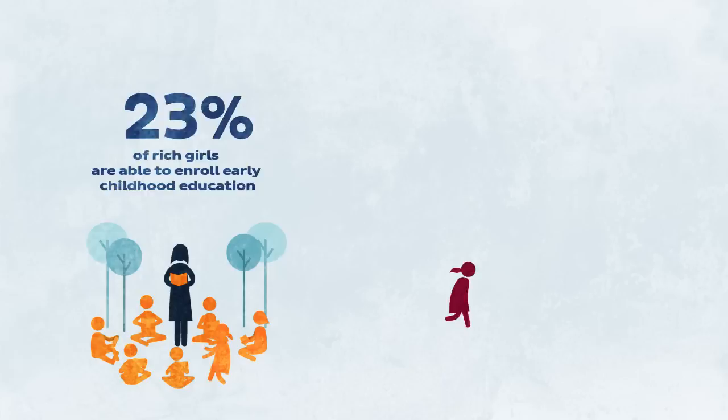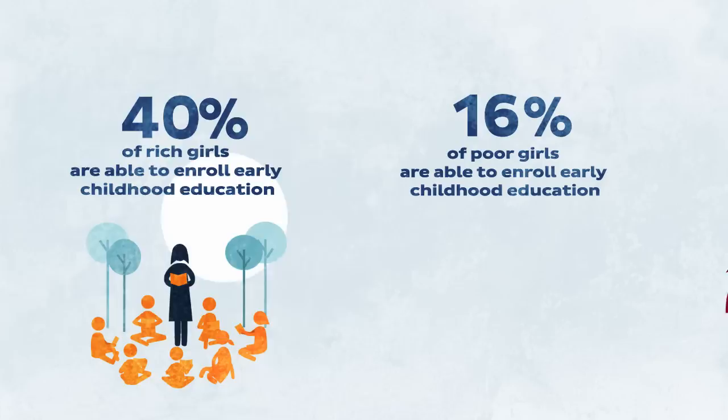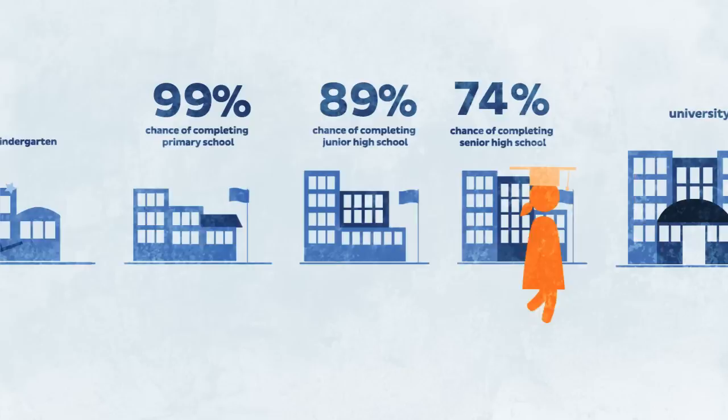Inequality deepened when the girls were old enough to start school. Dewi got a head start by attending early childhood education classes, which taught her how to learn. Putri, meanwhile, stayed at home.